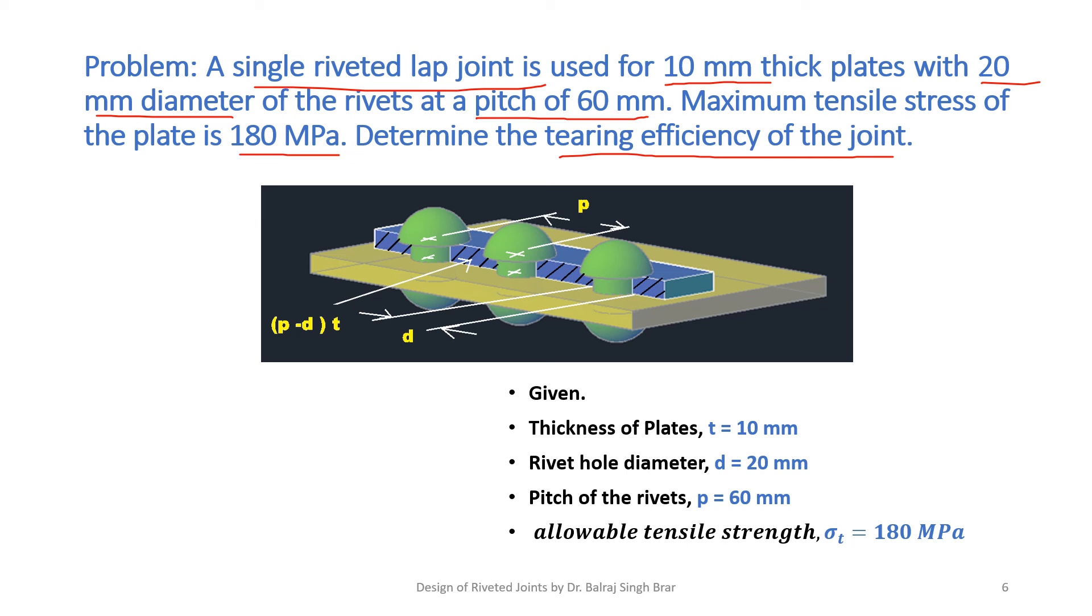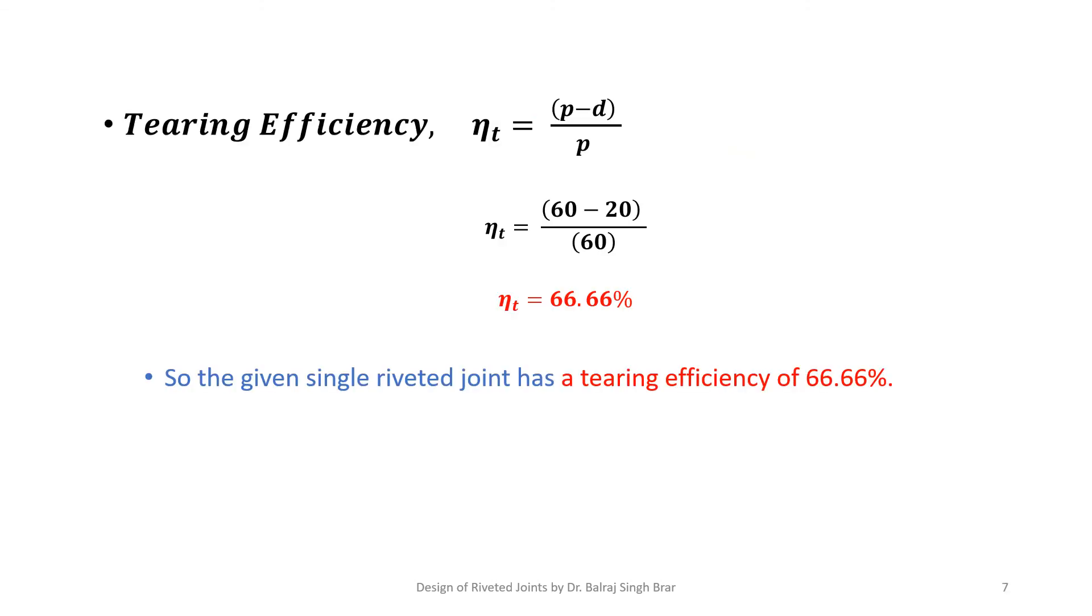Given is thickness of both the plates. Using the formula with P equals 60, D equals 20, tearing efficiency comes out to be 66.66 percent. So we have calculated that the given single riveted joint has a tearing efficiency of 66.66 percent.